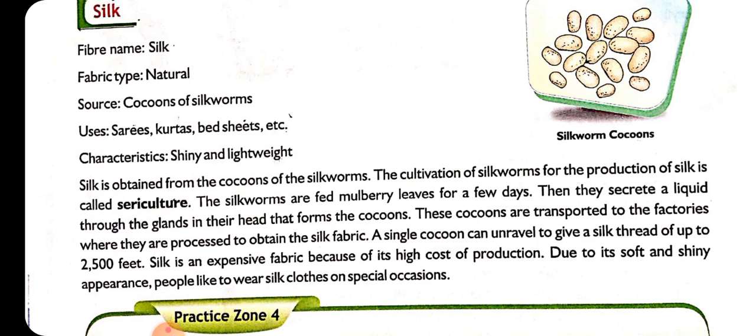The cultivation of silk worms for the production of silk is called sericulture. The silk worms are fed mulberry leaves for a few days. They grow in size day by day by feeding on mulberry leaves. Then they enter into the third stage — the resting stage — where they form a protective coating around their body by secreting a liquid substance with the help of glands present in their head. This liquid substance helps in the formation of the cocoon.